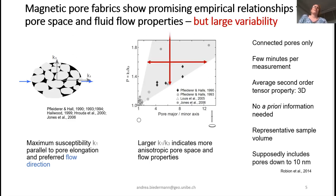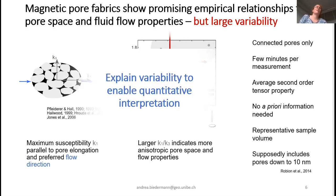There is just one problem with the method, and that's this really large variability we have seen in published studies. A P-value — an anisotropy degree — of, for example, 1.6, could represent pores with an axial ratio of anything between 2 and 12. Because of that, the current empirical relationships are not very useful when trying to make a statement about pore space. The aim of my work and my group's work is to explain this large variability, because if we can explain it, then it would be possible to interpret magnetic pore fabrics quantitatively.